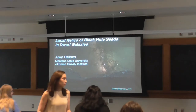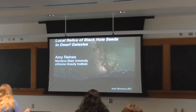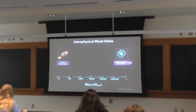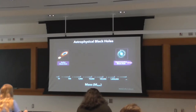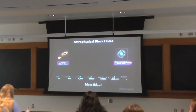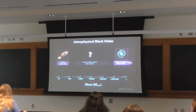Today I'm going to talk about local relics of black hole seeds in dwarf galaxies. Astronomers have detected two kinds of black holes: stellar mass black holes with masses around ten solar masses, which form when massive stars collapse, and supermassive black holes with masses from a million to a billion solar masses. These monster black holes live at the centers of essentially all giant galaxies, including our Milky Way, but we don't know how they form. Discovering black holes in the intermediate mass range can provide crucial clues to the origin of supermassive black holes.